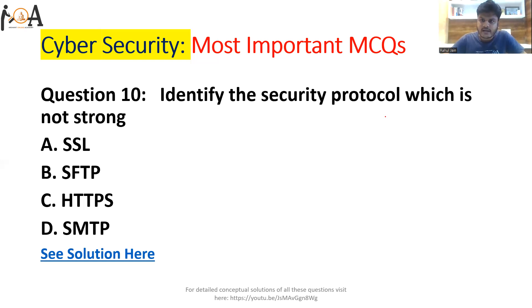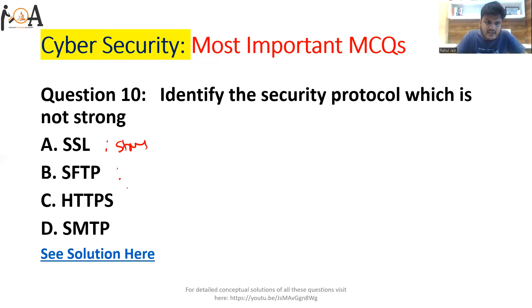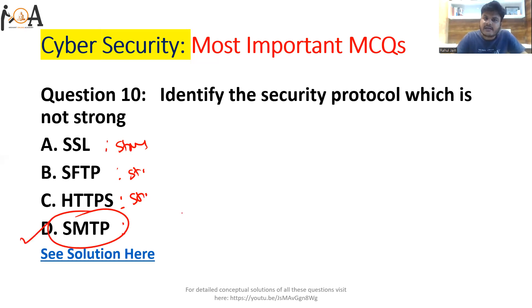The last question: identify the security protocol which is not strong. SSL (Secure Socket Layer) is strong. SFTP (Secure File Transfer Protocol) is also strong. HTTPS (Hypertext Transfer Protocol Secure) is also strong. However, SMTP — Simple Mail Transfer Protocol — is not a strong protocol, so Option B is the correct answer.